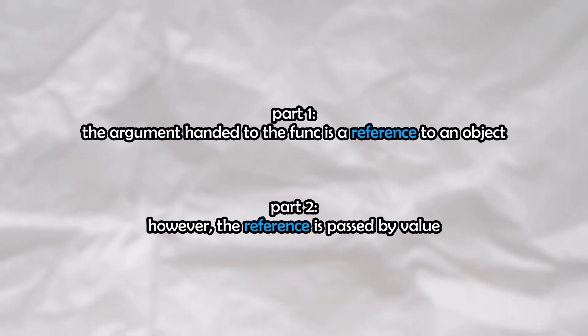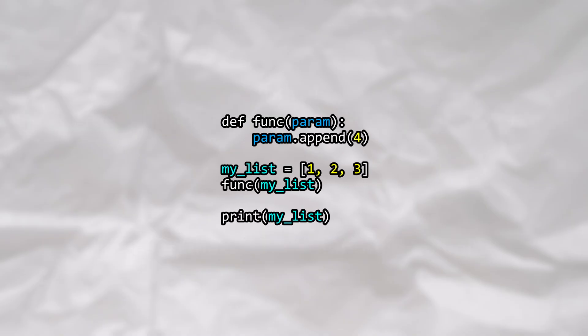Now it's time to introduce the second part of this pass-by-object reference concept. We know that the argument that we hand to the function is a reference to an object, however, this reference is passed by value. Let's see the implications of this. Let's go ahead and change this function.